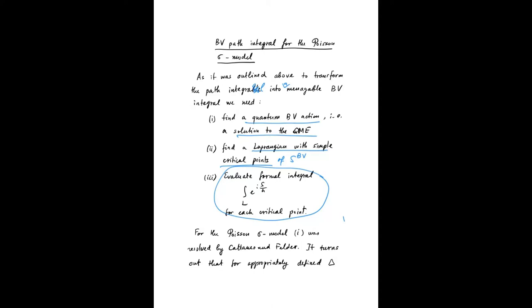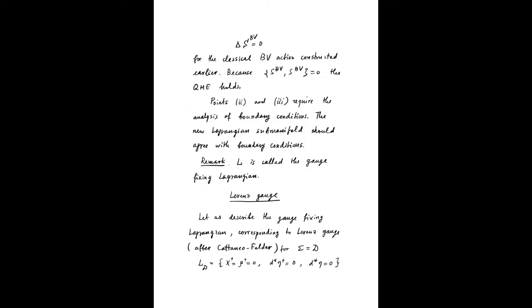For the Poisson-Sigma model, the first part was resolved by Cattaneo and Felder. It turns out that for the appropriately defined delta, the classical BV action is annihilated by delta, and that means that, and also, S bracket with itself is zero. So this means that not only the classical master equation holds, but the quantum master equation holds.